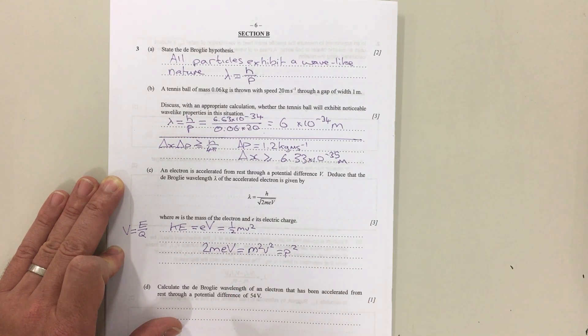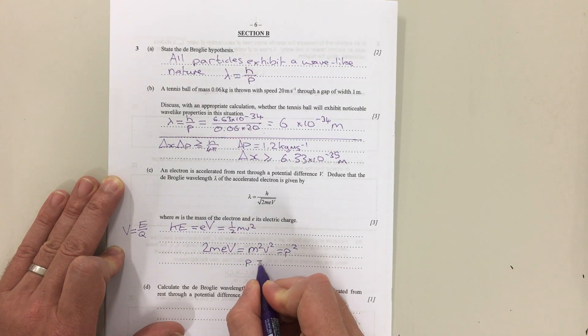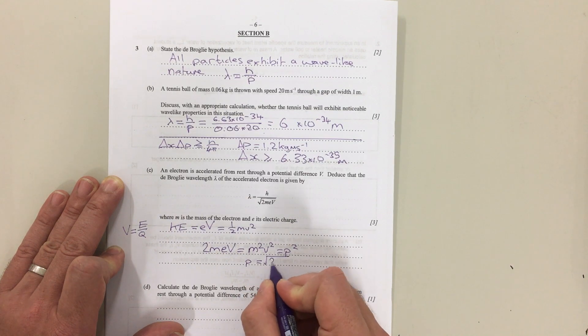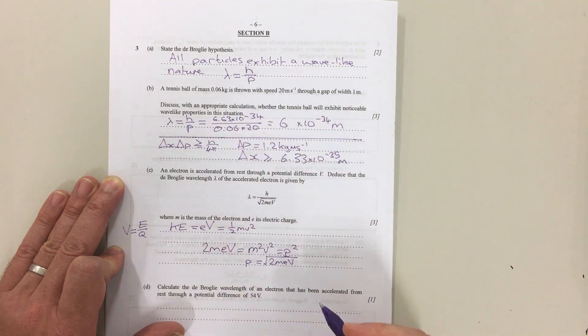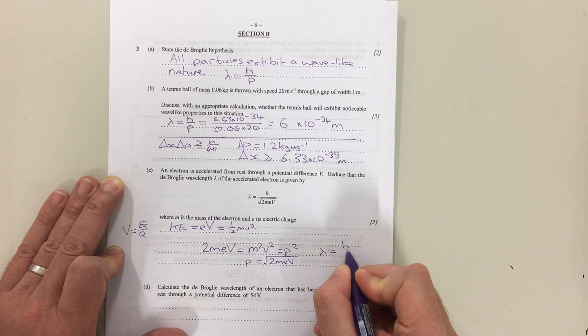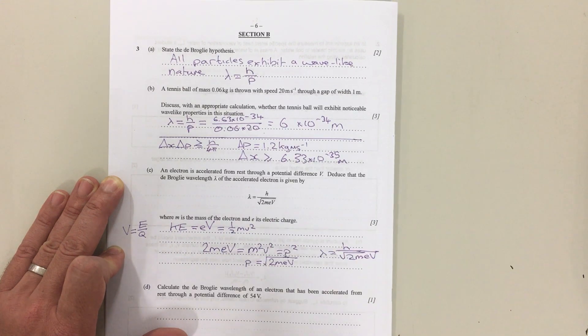So p, momentum, equals the square root of 2meV. And we put that into our equation up here and we get λ = h/√(2meV), and that's what we're trying to get there.